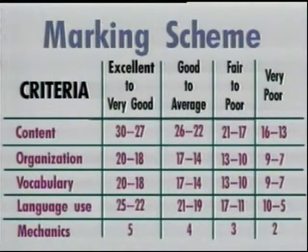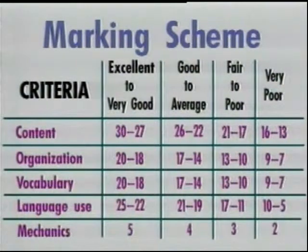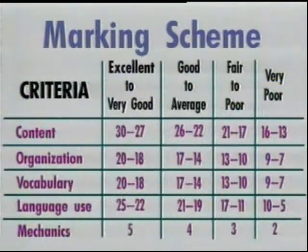Let's look at the marking scheme which makes use of five criteria: content, organization, vocabulary, language use, and mechanics. Each criterion is subdivided into four levels ranging from excellent to very poor, with points assigned to each level. Note that the criterion with the highest number of points is content with 30 points, followed by language use with 25, organization and vocabulary with 20 points each, and mechanics the lowest with only five points.